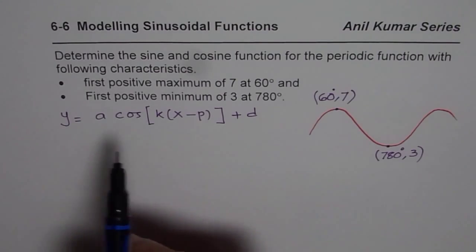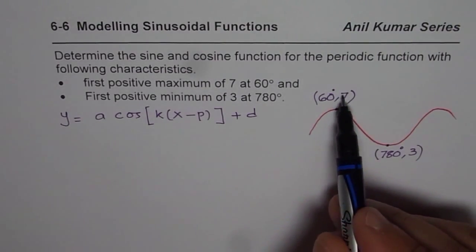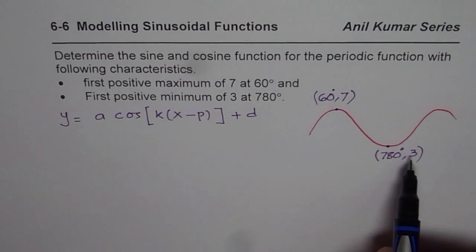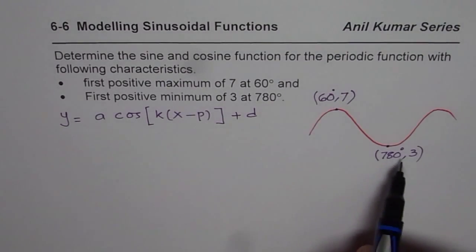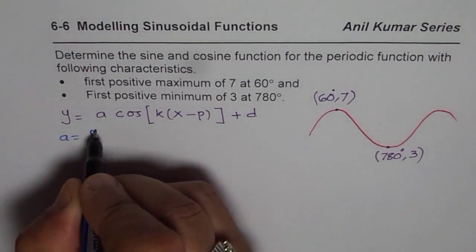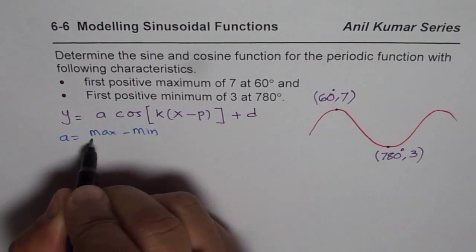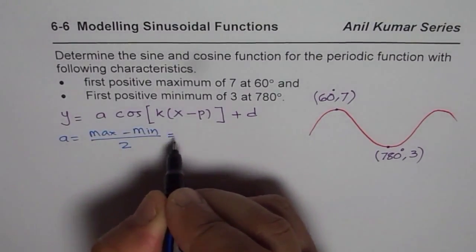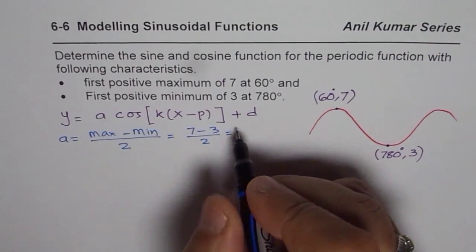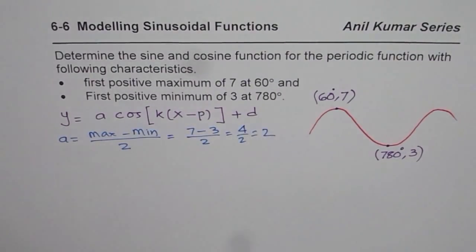To find all these parameters, to find 'a', we need the difference between maximum and minimum divided by 2. So a = (max − min) / 2. In our case, maximum is 7, minimum is 3, so that is 4 over 2, which is 2. So we know a = 2.